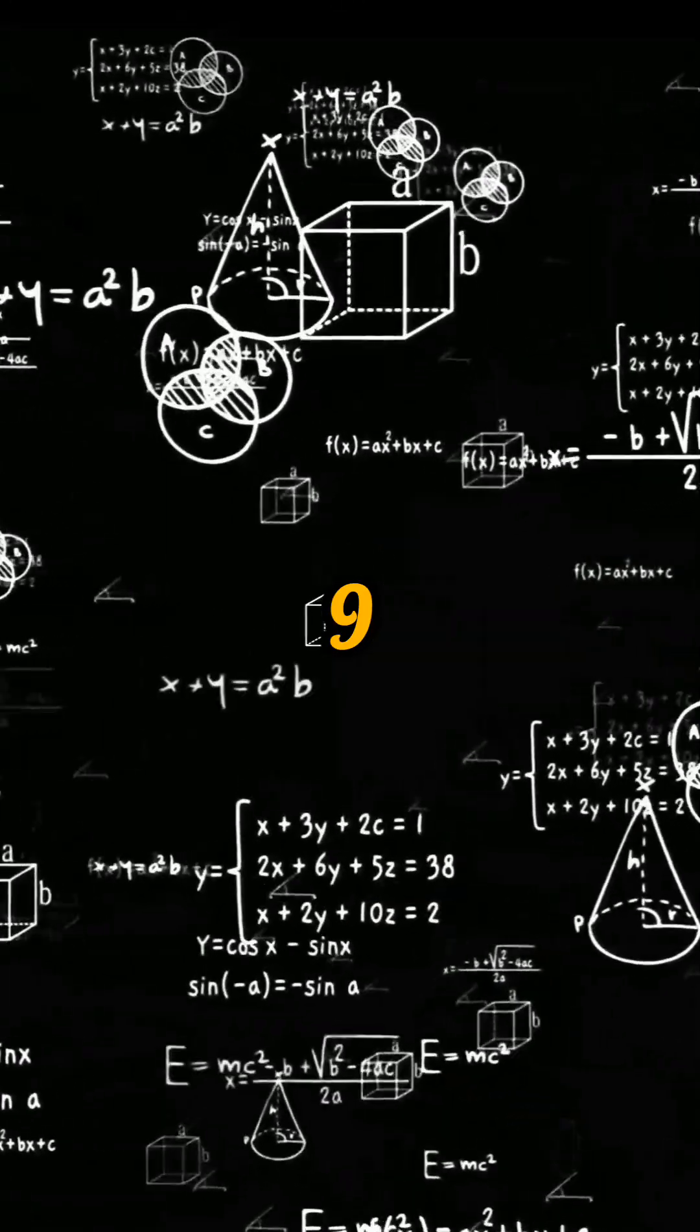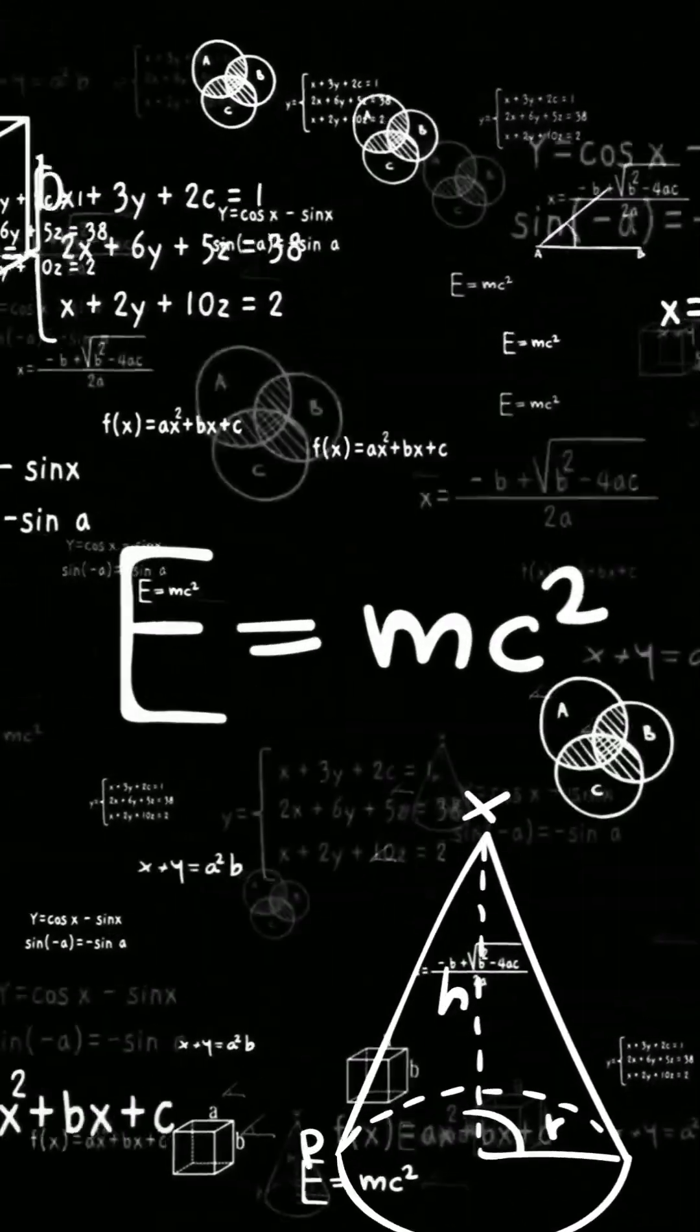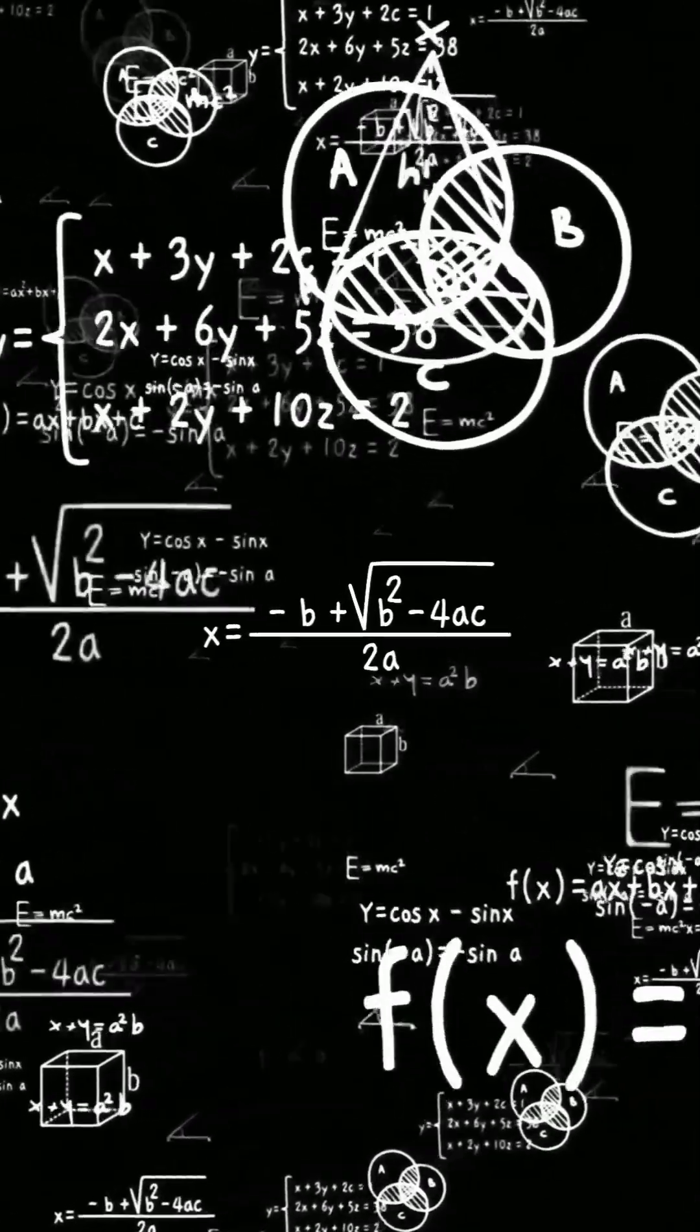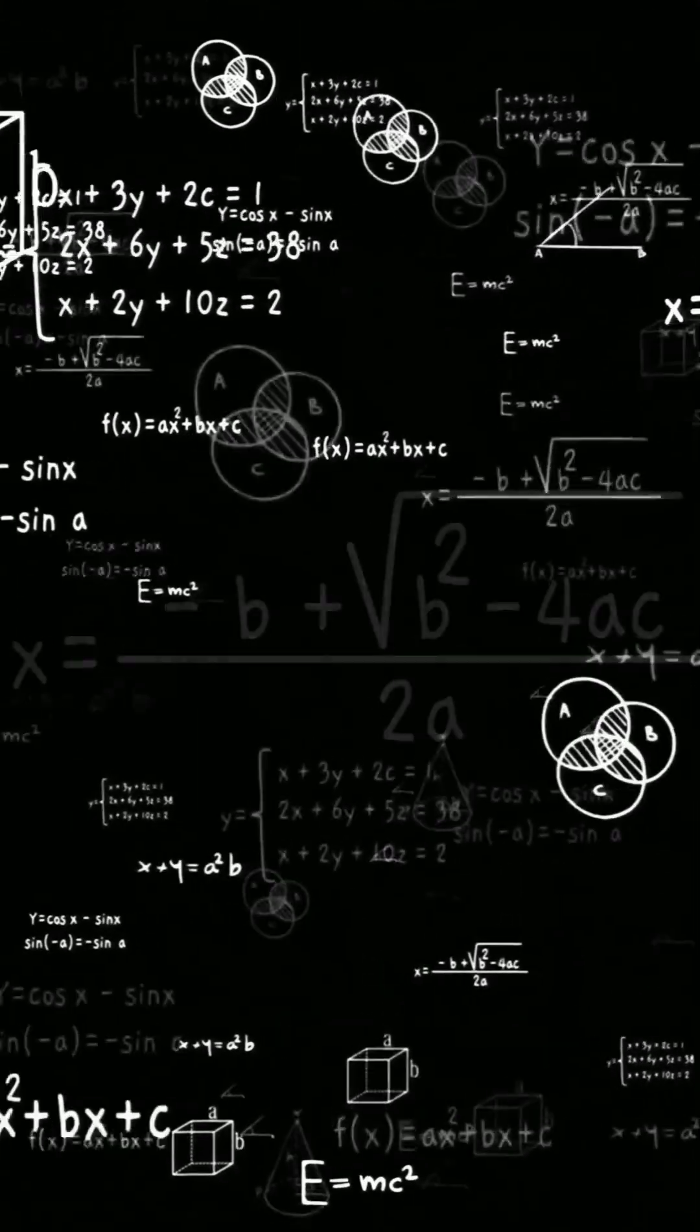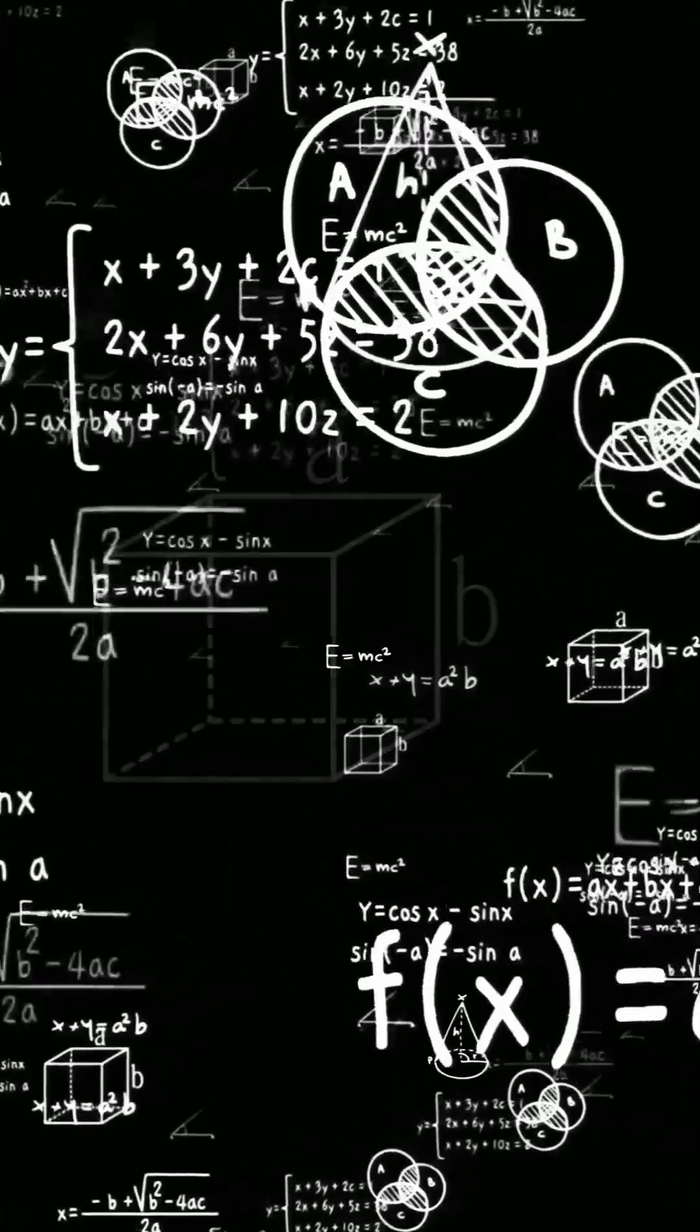Finally, subtract the number you originally thought of. Remember that very first number you picked? Take your current result and subtract that original number from it. For instance, if your current number is nine and your original number was five, then nine minus five equals four.